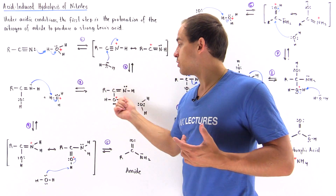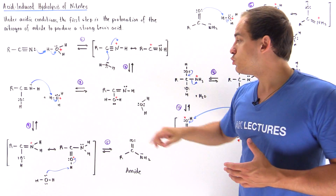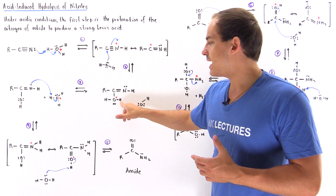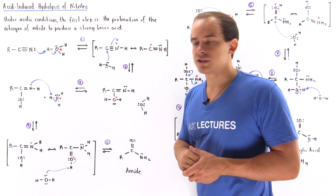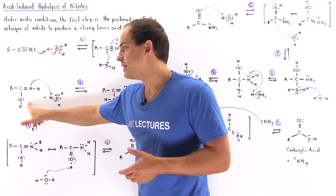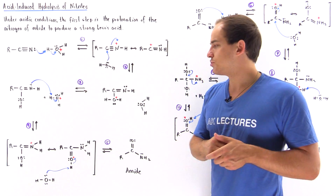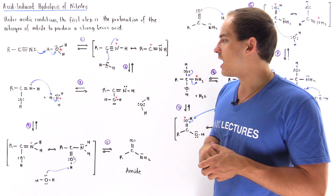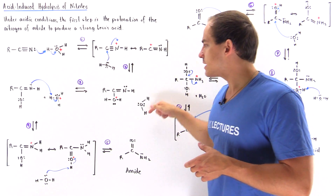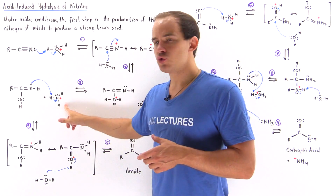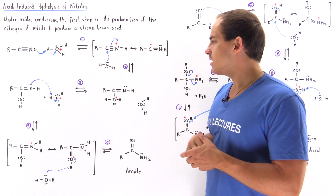This water molecule reacts with the intermediate in step three to deprotonate the H atom from our oxygen, forming an intermediate that no longer contains a positive charge on the electronegative oxygen. This water then transforms into hydronium when it deprotonates this oxygen.